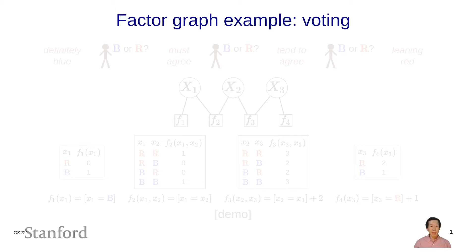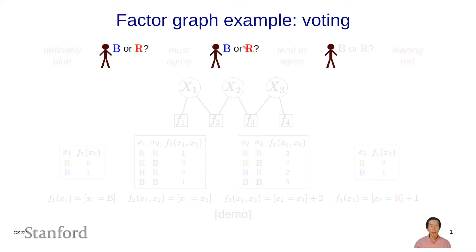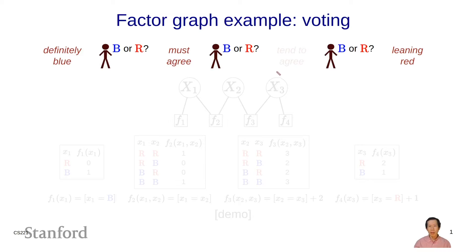Let's begin with an example: a voting example. Imagine there are three people — person one, person two, and person three — and each one is going to cast a vote, either blue or red. We know that person one is definitely going to vote blue, and person three is leaning red. Person one and person two are really close friends, so they must agree on their vote, whereas person two and person three are mere acquaintances and their votes only tend to agree. The question is, how are all these people going to influence each other and ultimately cast votes?